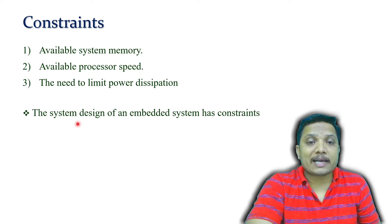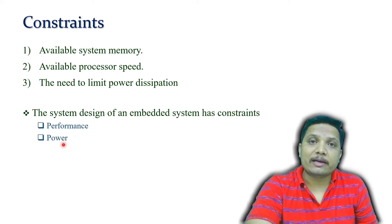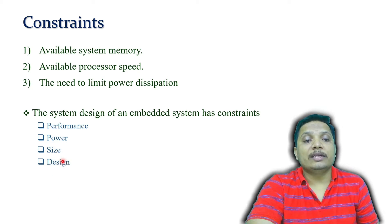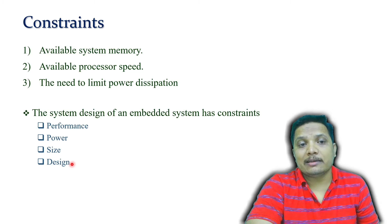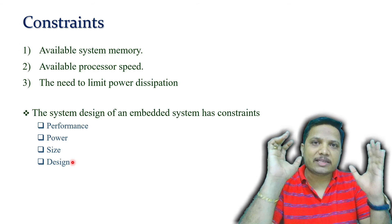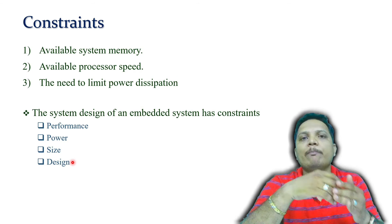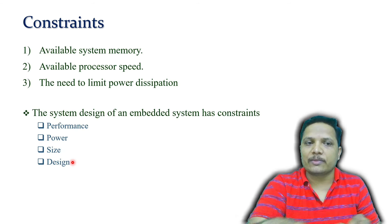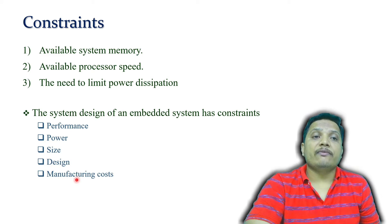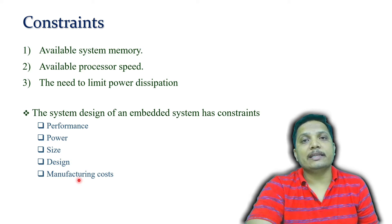When designing an embedded system, we need to consider the performance of the system, how much power dissipation there is, what the size of the system is, and whether the design is compatible with the entire system. Sometimes we use a smaller element as an embedded system within a larger system, so compatibility is essential. We also need to consider the manufacturing cost of the system.